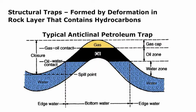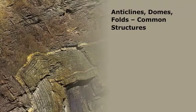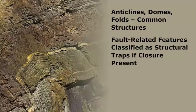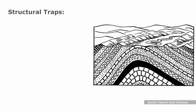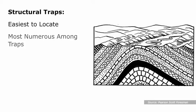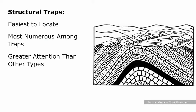Structural traps are formed by a deformation in the rock layer that contains the hydrocarbons. Anticlines, domes, and folds are common structures. Fault-related features may also be classified as structural traps if closure is present. Structural traps are the easiest to locate by surface and subsurface geological and geophysical studies, and are the most numerous among traps, having received greater attention in the search for oil than all other types.